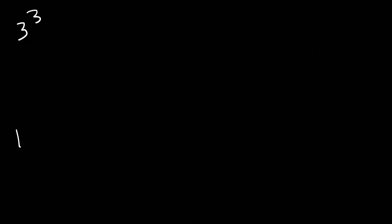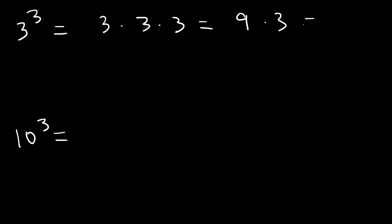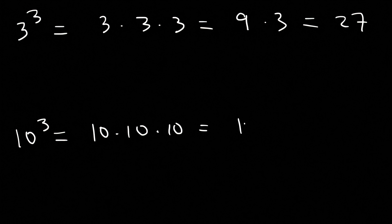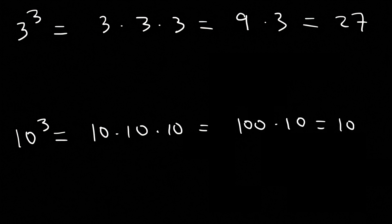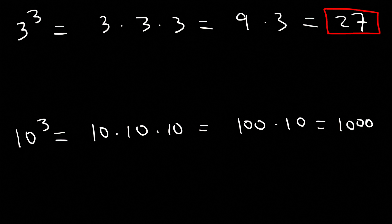Try some more examples — go ahead and expand and evaluate 3 to the 3rd and 10 to the 3rd. 3 to the 3rd is 3 times 3 times 3. 3 times 3 is 9, and 9 times 3 is 27. 10 to the 3rd power is 10 times 10 times 10. 10 times 10 is 100, and 100 times 10 is 1,000. That's a quick and simple way to evaluate expressions using exponents.